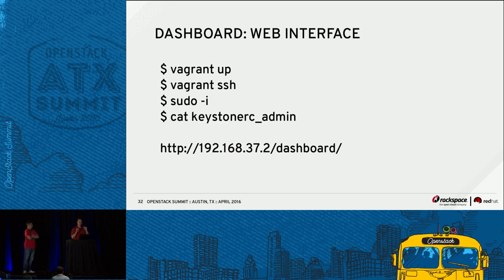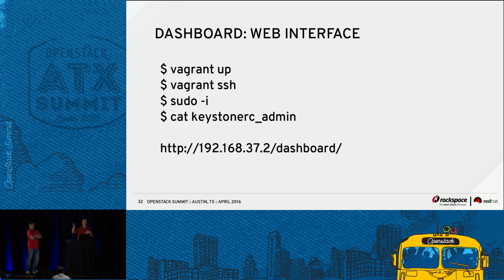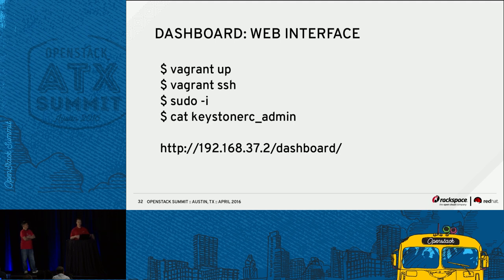Vagrant SSH will log you into the command line of that VM. Sudo -i will change you to the root user. The installation method we use is called PackStack — it's good for simple demo-like environments, which is why it's being used here. When it installs, the Keystone RC admin file is dropped into the root user's home directory. If you cat that file out, the administrator username and password generated for you are in there. The web URL to access the dashboard is 192.168.37.2 — the dashboard will be appended automatically.